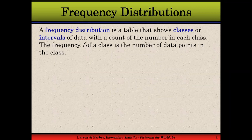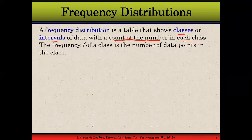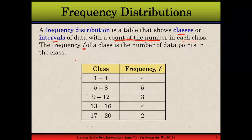What is frequency? Frequency is the number of times that a particular event has occurred. A frequency distribution is a table that shows classes, categories, or intervals of data with the count — the frequency — related to each category or interval. The frequency is denoted by f. The frequency f of a class is the number of data points in that class. In this example there are five classes.